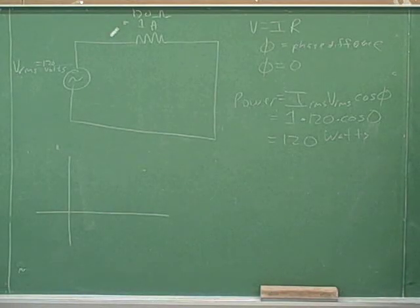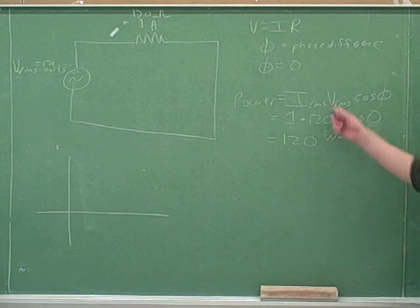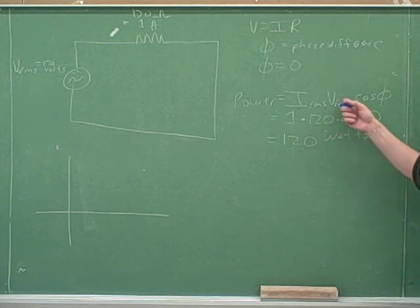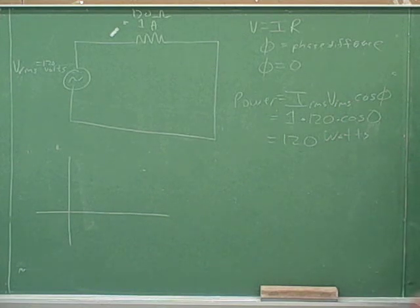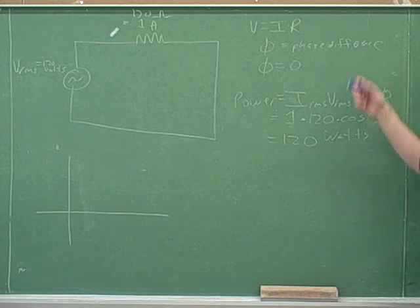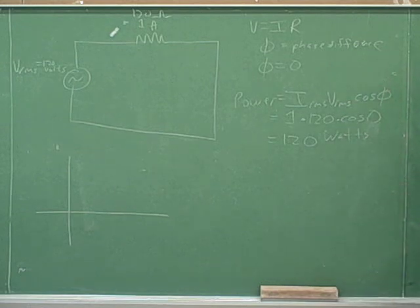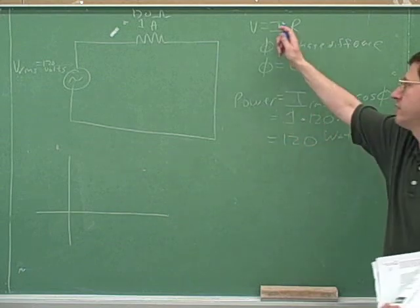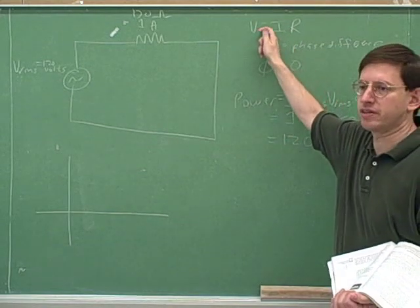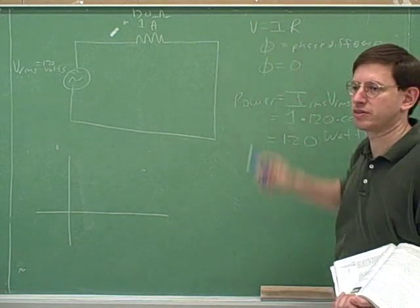Remember we said that the power in direct current would have been I times V. Well, it looks like there's no difference so far — this was also I times V. But that's just because resistors are the simplest element that you can put in alternating current. We're going to have to see what to do with capacitors and inductors. A resistor is very simple because its current and its voltage are in phase with each other.